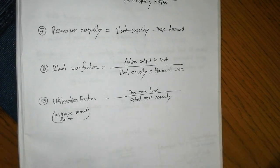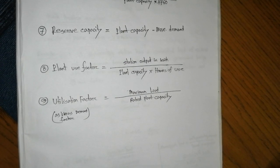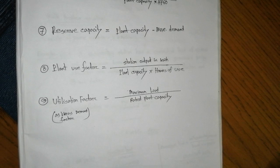To clarify the factors: load factor is average load divided by maximum demand; plant capacity factor is average load divided by maximum plant capacity; demand factor is maximum demand divided by connected load. These are the key formulas from this lecture.